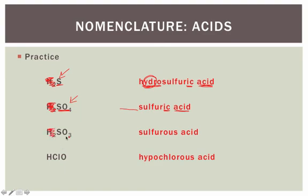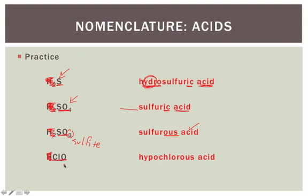Let's try another one. We get rid of the H and focus on what's over here. This is not sulfate — notice this is SO3. This is sulfite. It has an -ite ending, which means the ending now changes in our name to -ous. This becomes sulfurous, and again we tag on the word 'acid' to the end to get sulfurous acid.